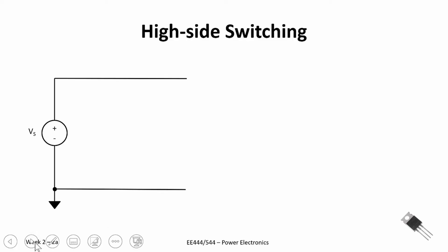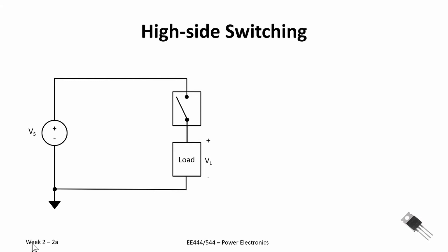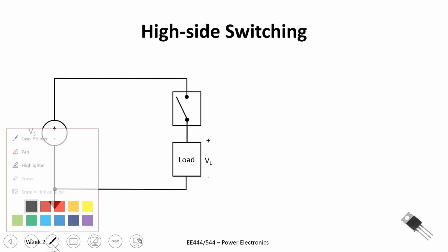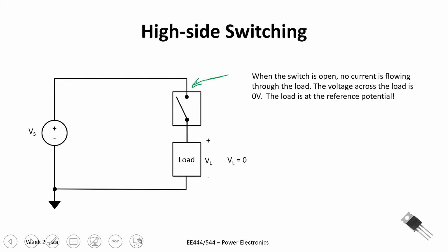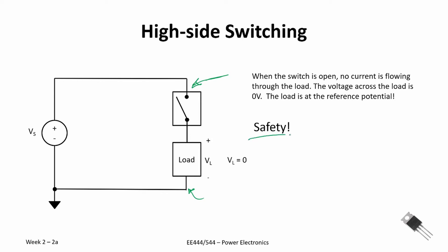The first thing we can look at is a high side switch. On a high side switch, we are connecting our load to our power supply. When the switch is open, no current is flowing through our load, the voltage across our load is zero, and it's safe — our load is referenced to ground potential. Safety is a big reason for sometimes doing high side switching; we can go in and touch it. For example, your home lighting — the switches on your home lighting are all high side switches. We switch the power to the light.